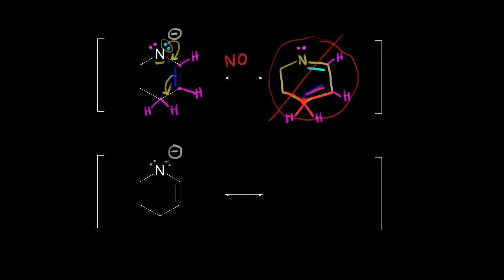Let's talk about the right way to do it. You take these electrons and move them into here, and then these pi electrons have to go somewhere — they move out onto this carbon. So the correct resonance structure has our double bond here, and the electrons placed on this carbon give it a negative one formal charge. The light blue electrons move in to form the double bond, the dark blue electrons move off onto this carbon giving it a negative one formal charge, and the magenta electrons remain behind on the nitrogen.